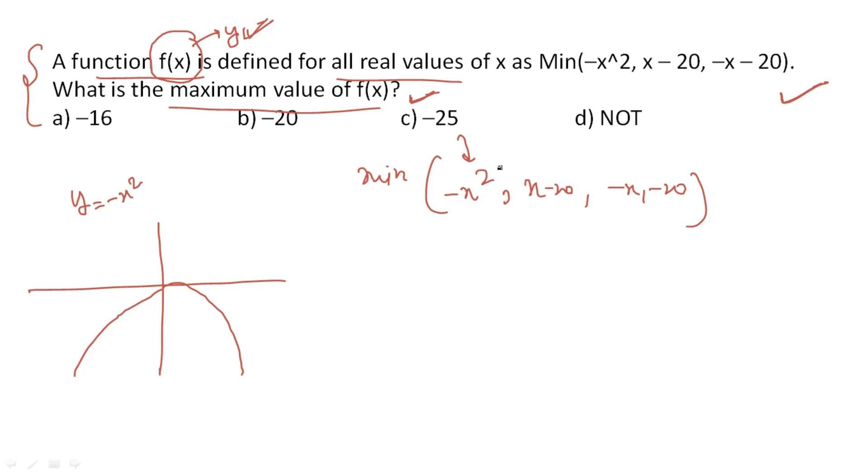The logic is very important to understand: why do we equate them? Let's say you have three equations: y equals minus x squared, y equals x minus 20, and y equals minus x minus 20. Now you cannot equate two equations with the same slope.